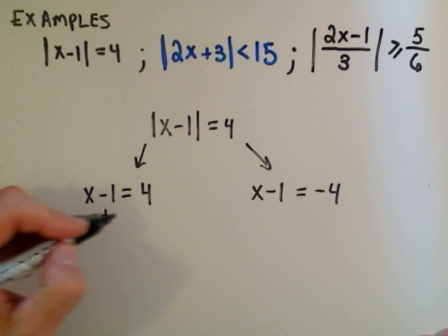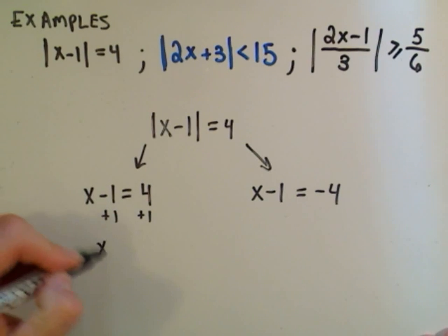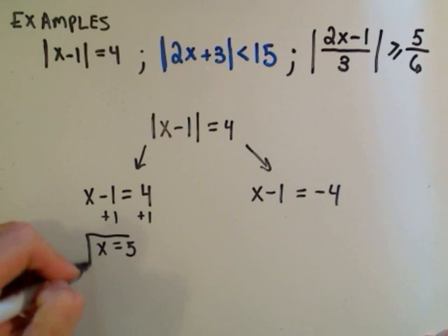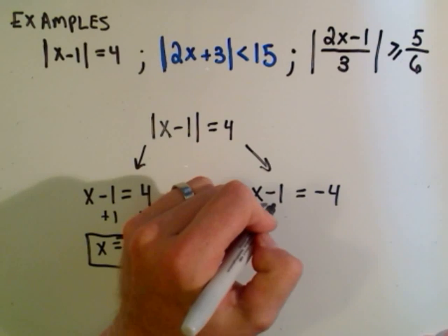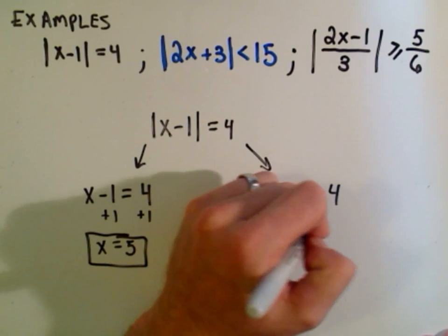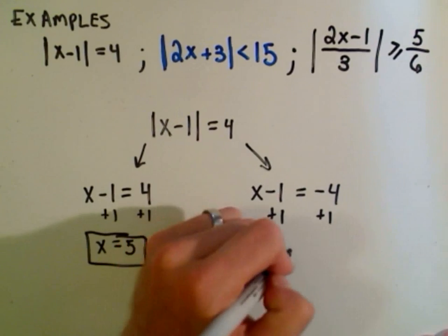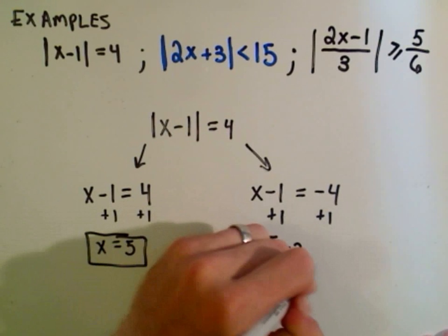Here we just add 1 to both sides. We'll simply get x equals 5 as one solution. And the other one, we add 1 to both sides and get x equals negative 3 as our other solution.